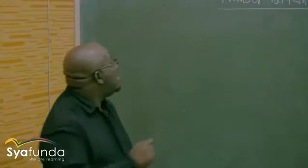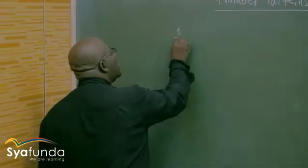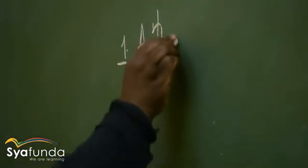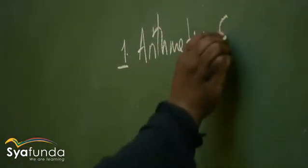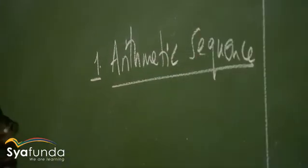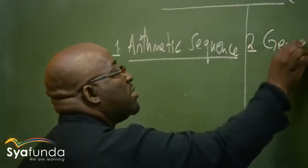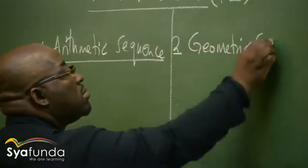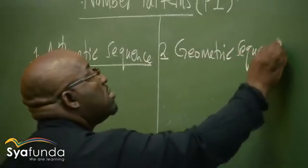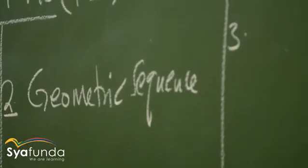Quadratic sequence — think of the quadratic equation: ax squared plus bx plus c. It takes that format. Our patterns are divided into three: number one is the arithmetic sequence, secondly we have the geometric sequence, and lastly we have what we call the quadratic sequence.